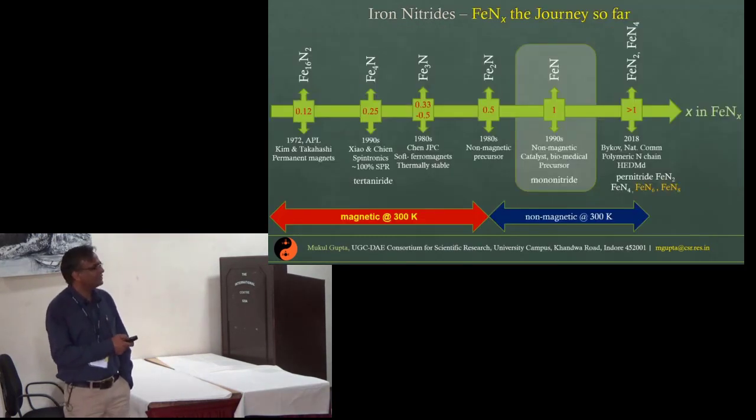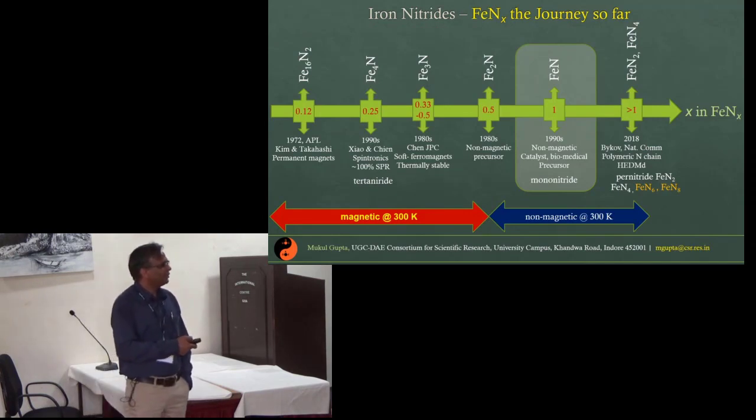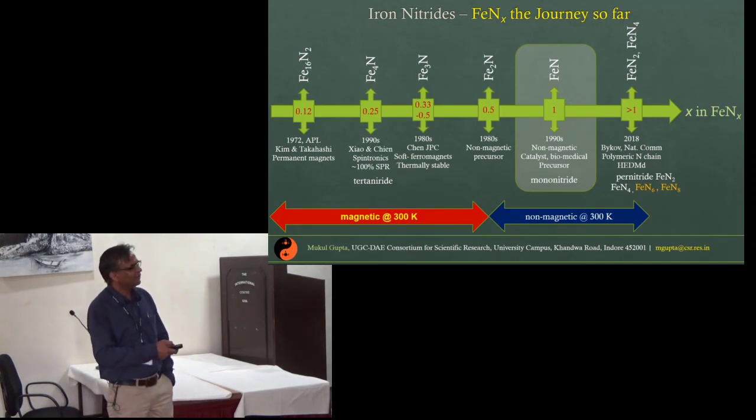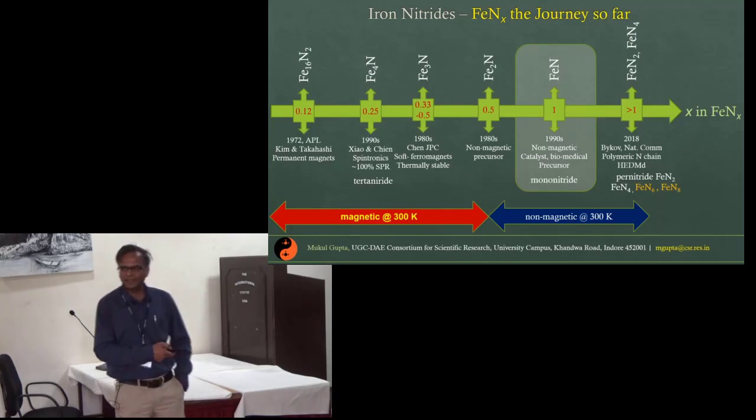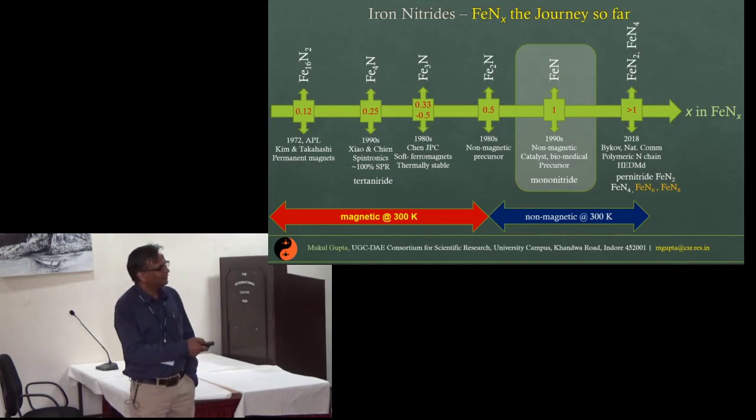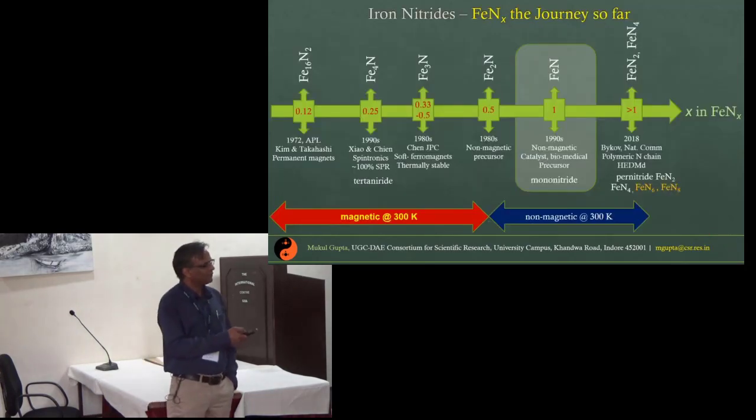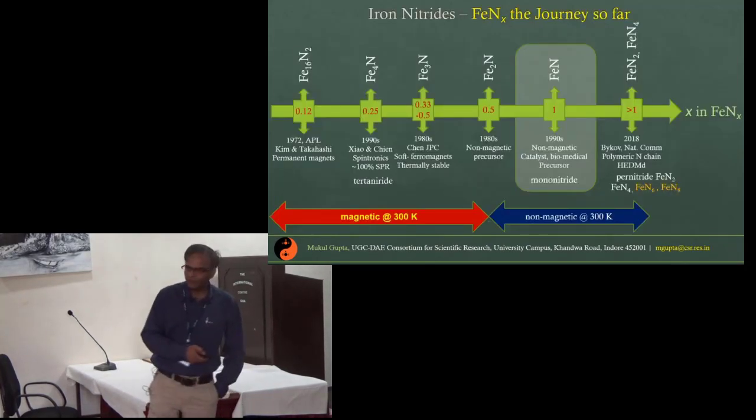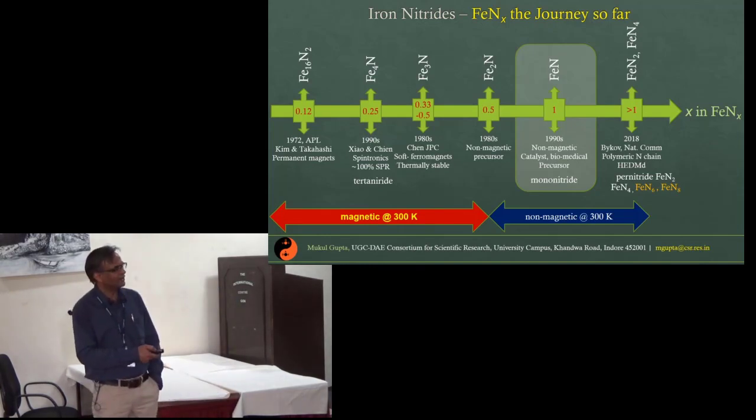The iron nitrides in general, if you increase the amount of nitrogen in iron, they follow a variety of phases. Right from 0.12 to 0.5, these phases are magnetic at room temperature. But when x exceeds 0.5, then the phases become non-magnetic at room temperature. Today we are going to focus only on the mono-nitride films.